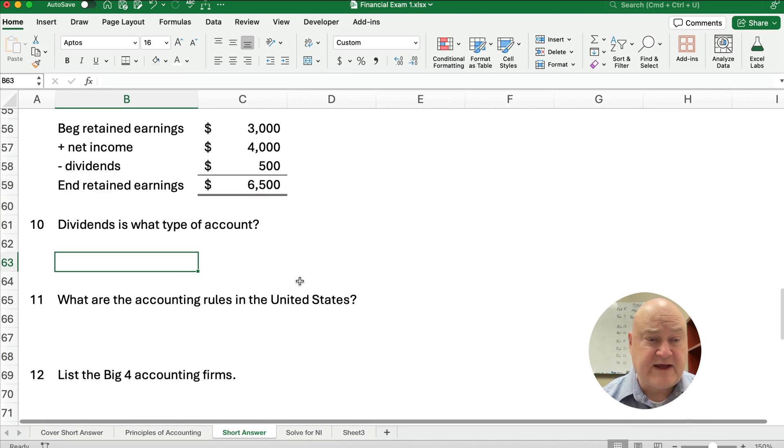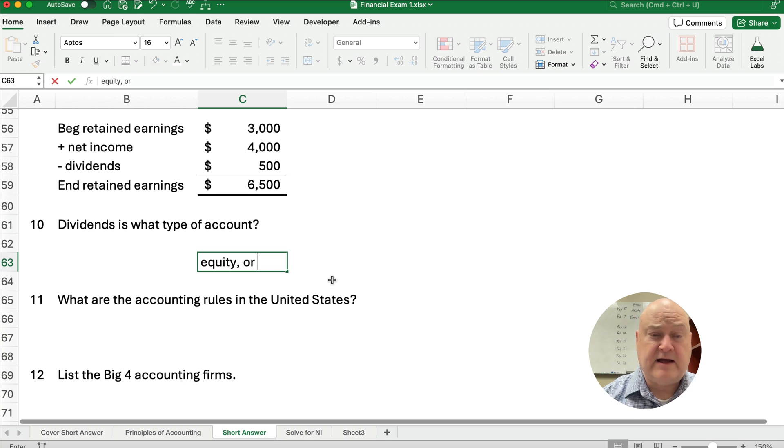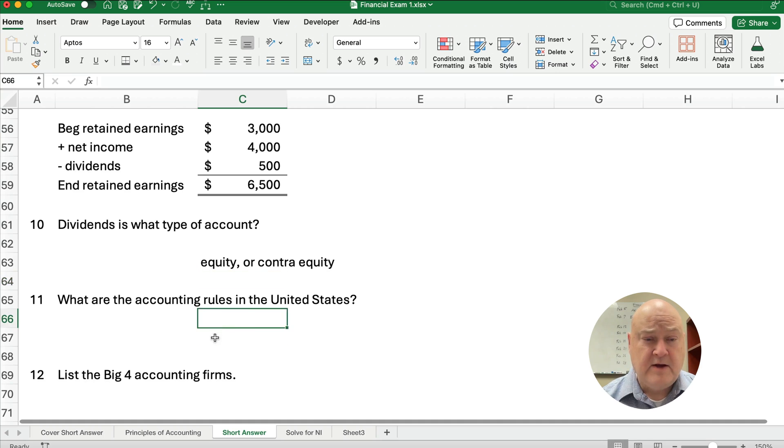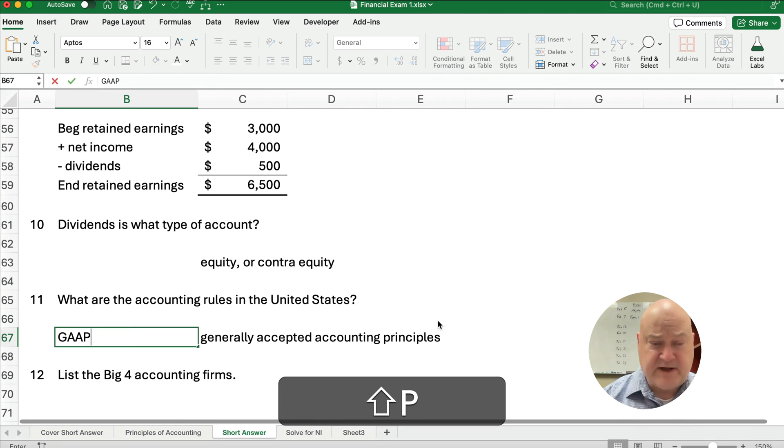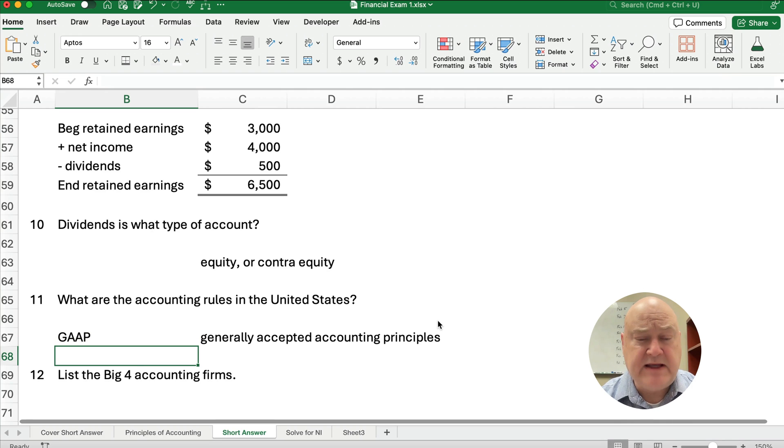Dividend is what type of account? Well, it's an equity. Remember, equity is true, but also you could say it's a contra equity because it reduces the balance of equity. What are the accounting rules in the United States? We call it GAAP or Generally Accepted Accounting Principles. Sometimes we use the abbreviation GAAP, G-A-A-P, is Generally Accepted Accounting Principles.